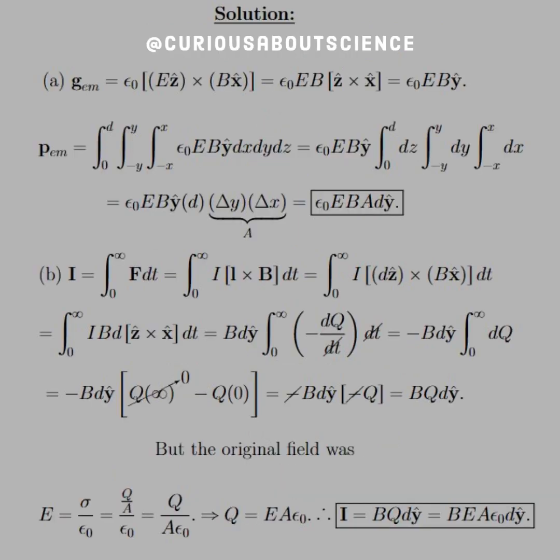So if we're looking at the electromagnetic momentum density, what we need to do is take the cross product of E and B. As determined here, the momentum density g = ε₀(E × B).